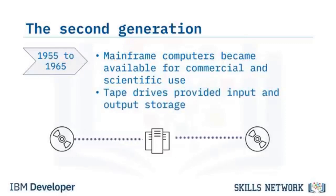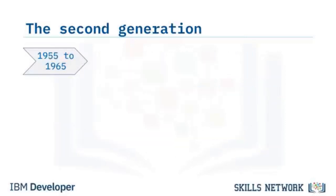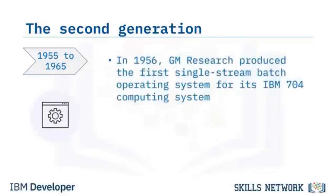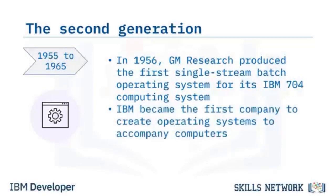In 1956, General Motors Research produced the first single-stream batch operating system, notably for its IBM 704 computing system. Subsequently, IBM became the first company to create operating systems to accompany computers.